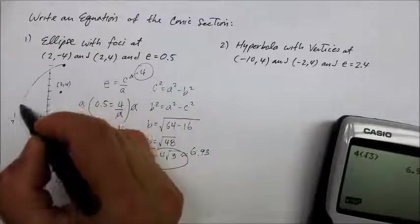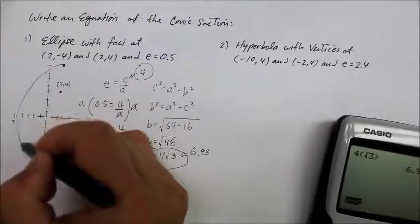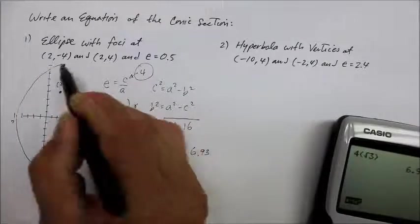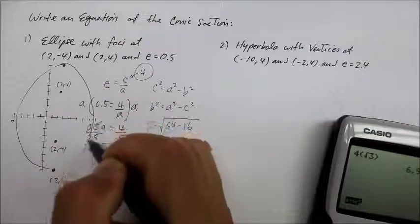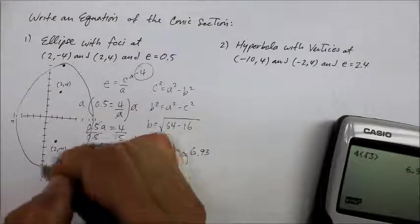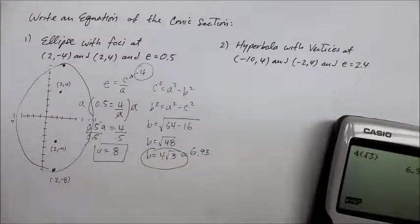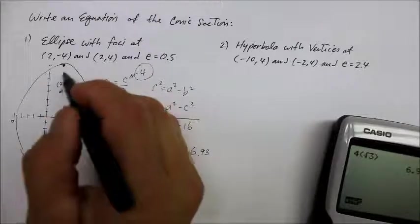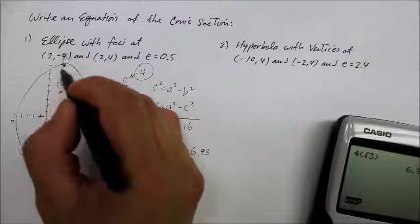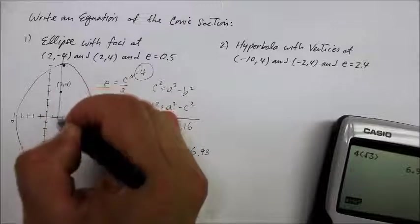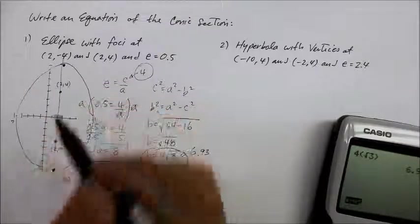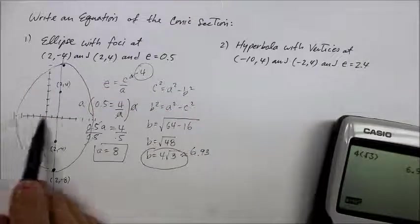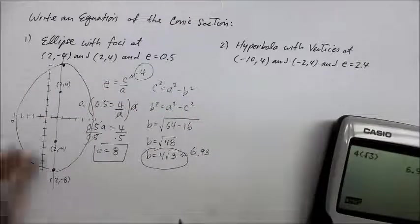I'll sketch it out to get a picture of what it's supposed to look like. The line of symmetry is along x equals positive two and y equals zero.